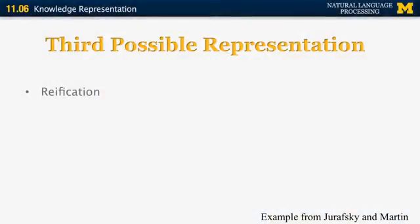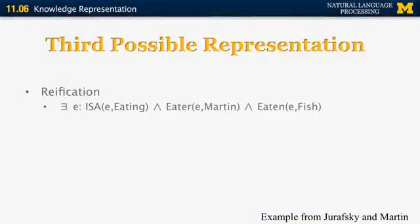So we go to a third possible representation: representing eating as an event, as a special object. This process is called reification. We define an event e, where e is an instance of a category called eating event. Then there is an eater for event e — the eater's name is Martin — and the eaten argument for event e is the fish.